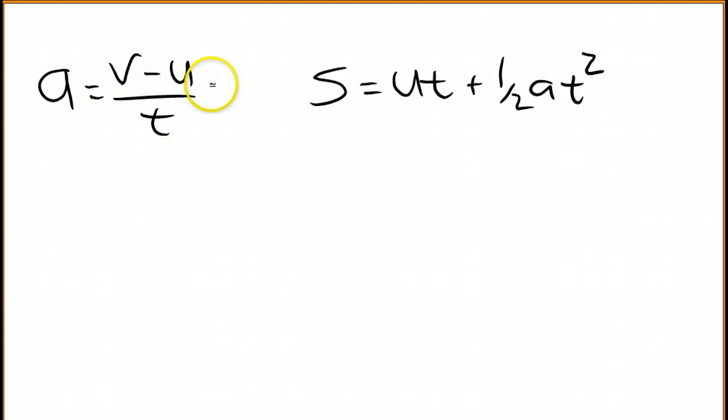So we're going to start with this base definition of acceleration on the left. Now what I need to do is I want to get rid of time. So I have to solve for t from this equation and then substitute that into the t's that are on the right.